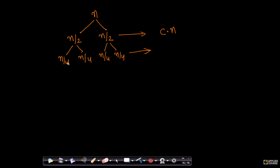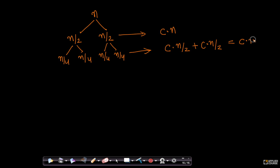If you have two arrays of size n/4 each, merging them takes c·(n/4 + n/4) = c·(n/2). Merging the other pair also costs c·(n/2), so the total at that level is c·n — the same as the level above.